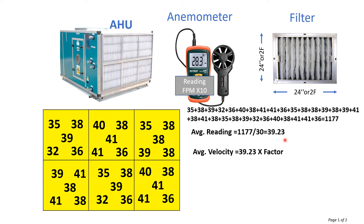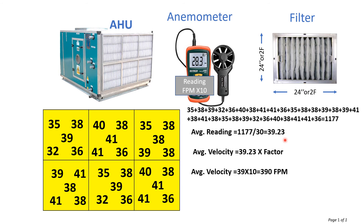For the average velocity, we need to multiply the average reading by the multiplying factor of the anemometer. The anemometer multiplying factor is 10, so the average velocity will be 390 FPM.